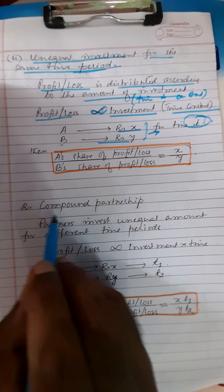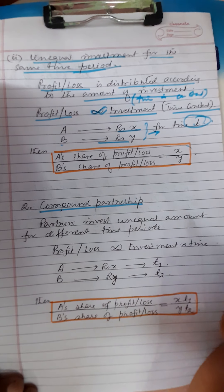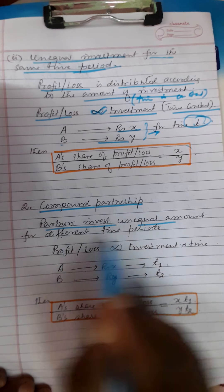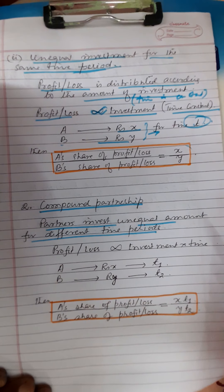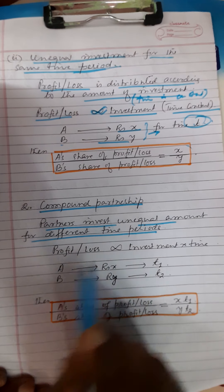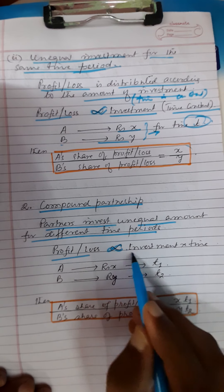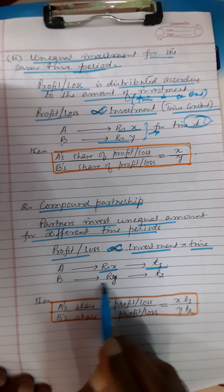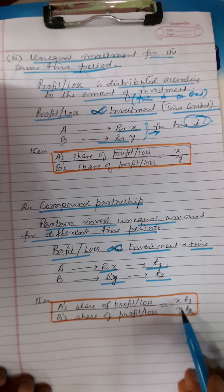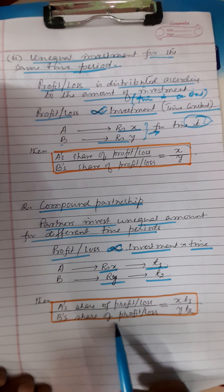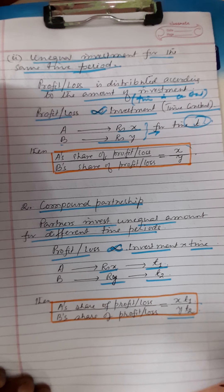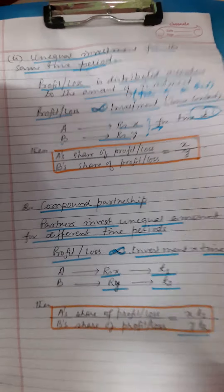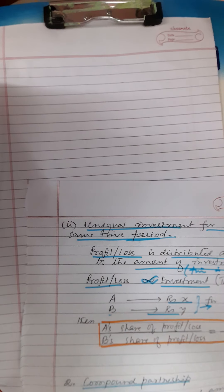The next type is compound partnership. In compound partnership, partners invest unequal amounts for different time periods. The profit and loss is proportional to investment multiplied by time. If A invests rupees X for time T1 and B invests rupees Y for time T2, then A's share divided by B's share equals X×T1 divided by Y×T2. Let us see some problems to make the concept clearer.